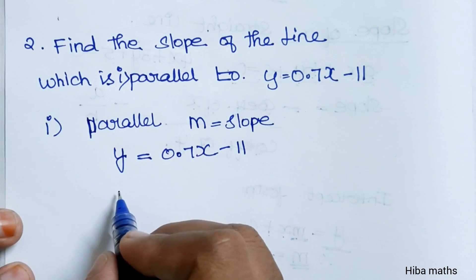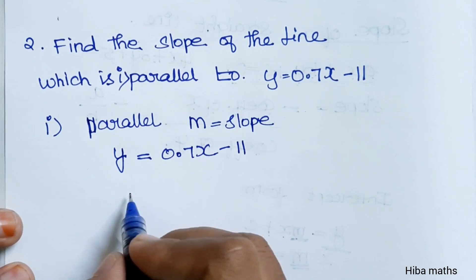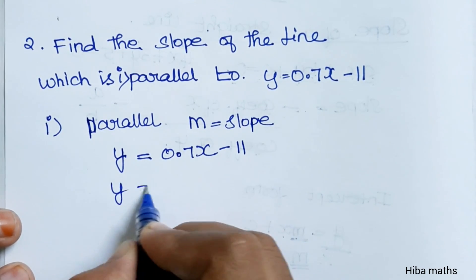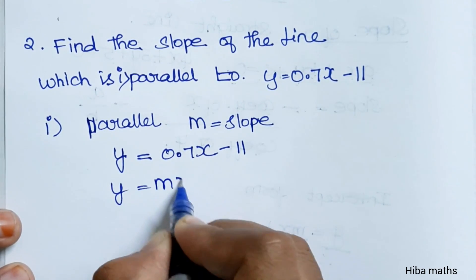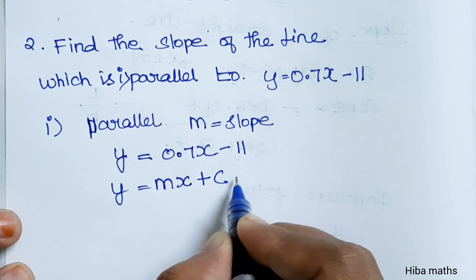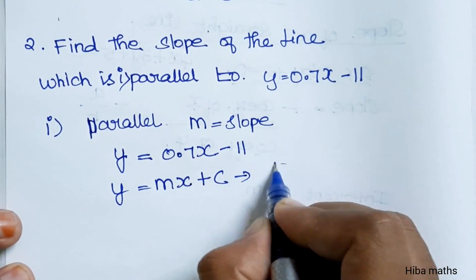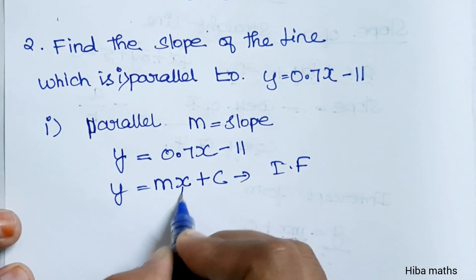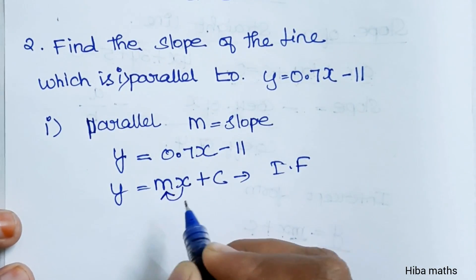We compare using the slope-intercept form. So y is equal to mx plus c — this is the intercept form. In the intercept form, the m value is the slope coefficient.